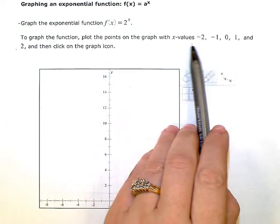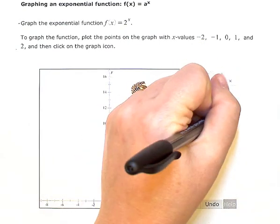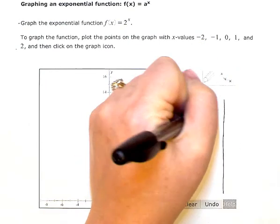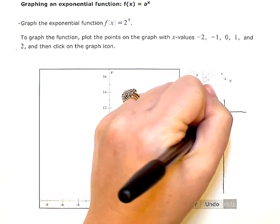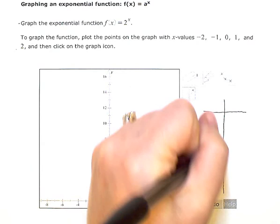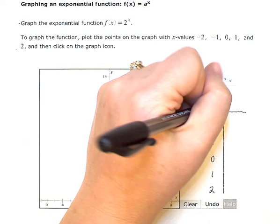The points that they're asking us for are the values for the x coordinates: negative 2, negative 1, 0, 1, and 2. So these are my x values.